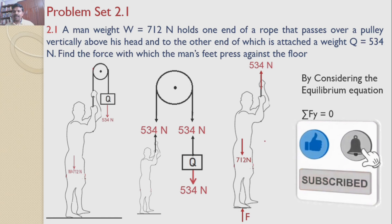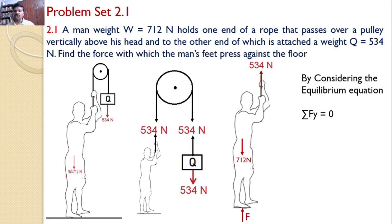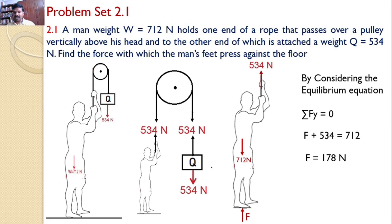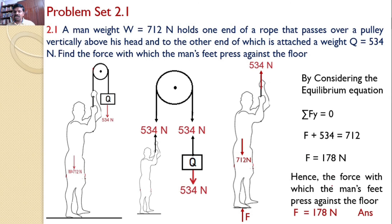Applying the equilibrium equation ΣFy = 0, we write: F + 534 = 712, where both F and 534 Newtons act upward and 712 Newtons acts downward. Simplifying, F = 178 Newtons. Hence, the force with which the man's feet press against the floor is 178 Newtons.